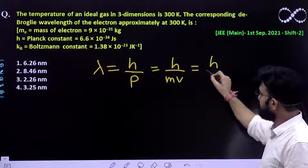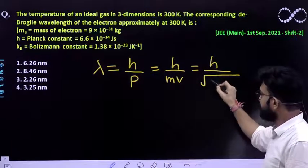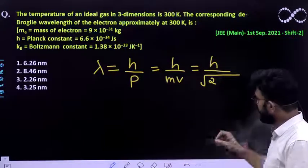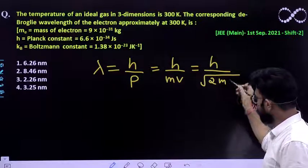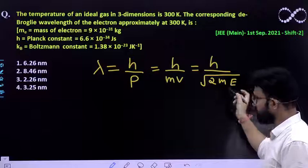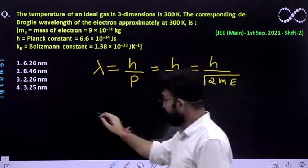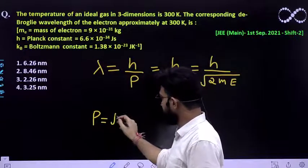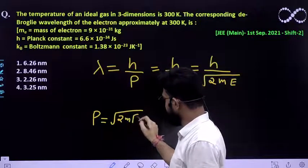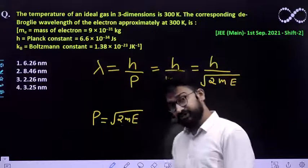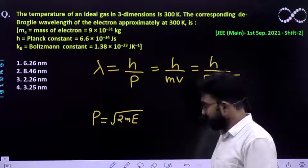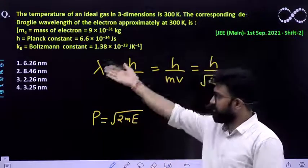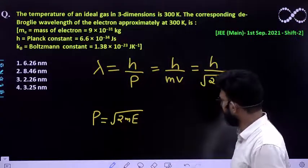So this can also be written in terms of energy possessed. Let kinetic energy possessed by a particle be E. So this we already know that P is nothing but root of 2mE, where E is the kinetic energy possessed by any particle whose wavelength you need to find out.